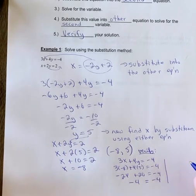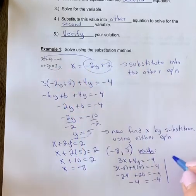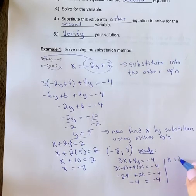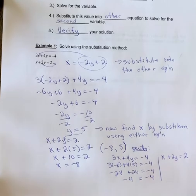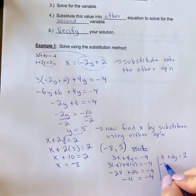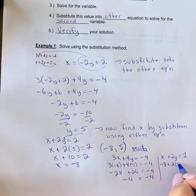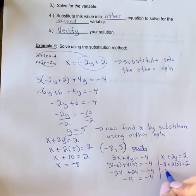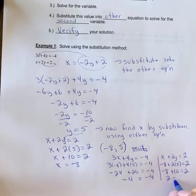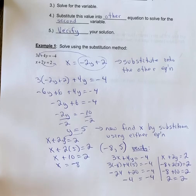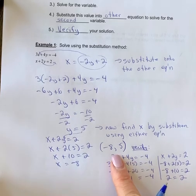Then we're going to pick the second equation: x plus 2y equals 2. We're going to make sure that this is correct. Negative 8 plus 2 times 5 equals 2. We get negative 8 plus 10 equals 2. 2 equals 2. So yes, this is a true solution.